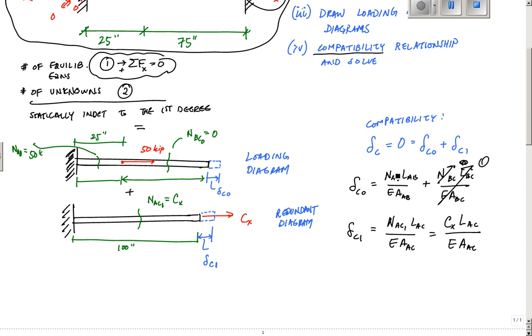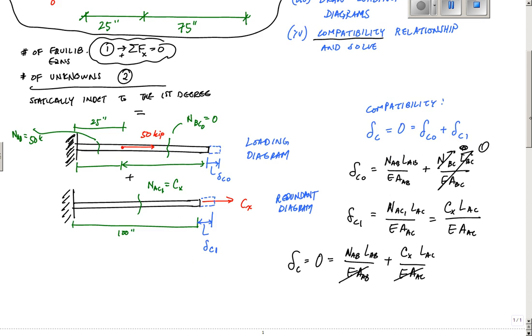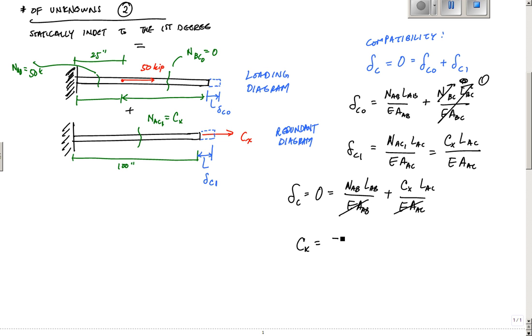And now I plug these back into my compatibility relationship right here so that I have delta C, which is equal to zero. The deformation of C is zero at this reaction or where I have this. And here I have NAB LAB over EA AB plus CX LAC over EA AC. And thankfully EA, the cross-section of this entire rod or this element is uniform. It's three inches squared. We don't even need that number because it's equal to zero, and we just multiply this whole thing through by EA, and it's zero. And what we end up with is that CX is equal to minus NAB LAB over LAC. And just make sure I did that right. Double-check for me. Who knows? I could be wrong right here. And I know that NAB is equal to 50 kips in tension minus negative 50 kips.